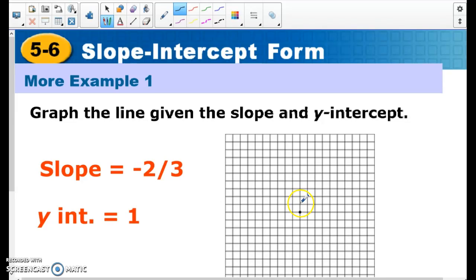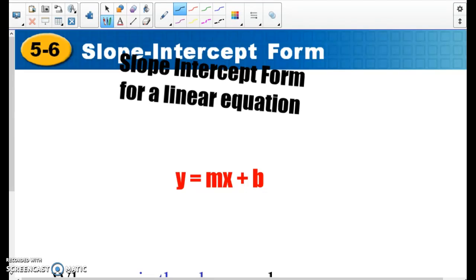So y-intercept of 1. I'm going to put a dot there. And then a slope of negative 2/3. So down 2 and right 3. Same thing, down 2 and right 3. Now I'm going to connect those, and that's going to be my line.